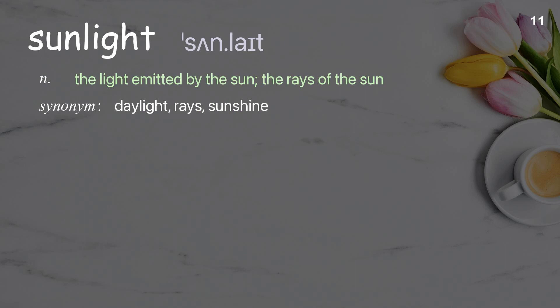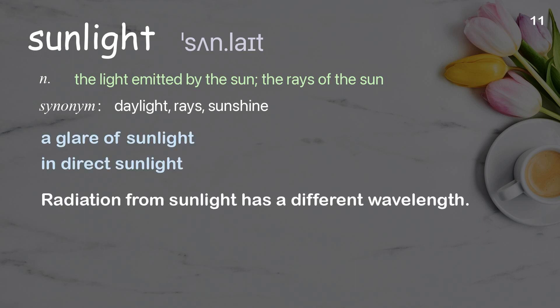Sunlight: the light emitted by the sun; the rays of the sun. Examples: a glare of sunlight; indirect sunlight. Radiation from sunlight has a different wavelength.